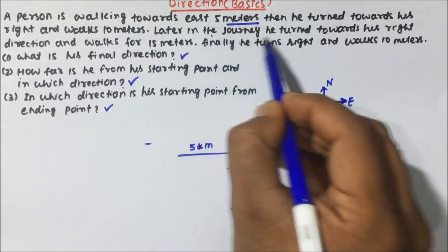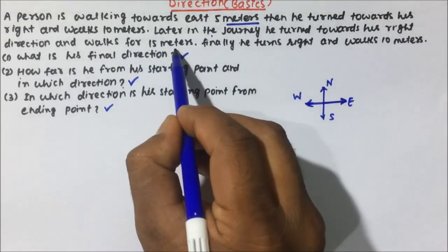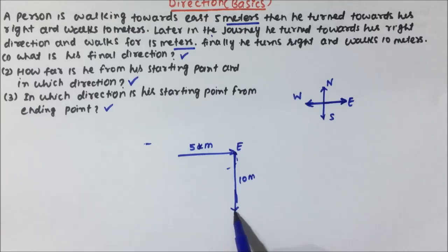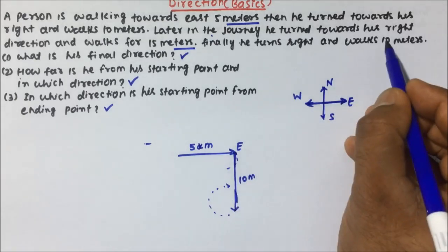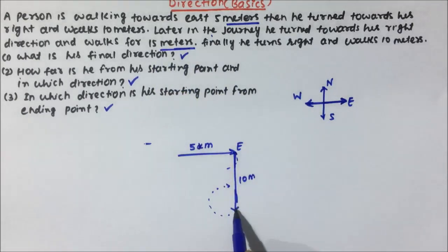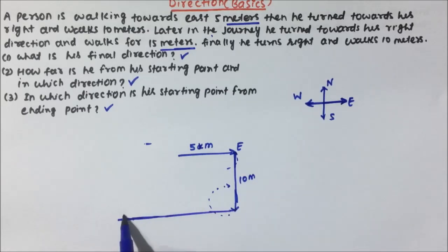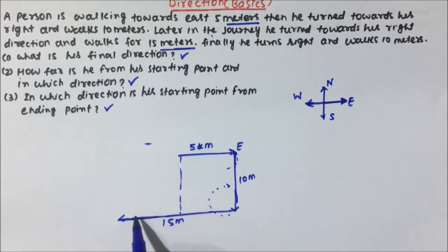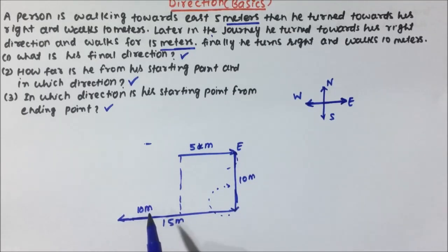Then later in his journey, he turns towards his right direction and walks 15 meters. Again, we have to find out in which direction right will be. Put your pen point here — clockwise means you go towards the minute hand direction. So the clockwise direction will be in this direction (west), and again he is moving 15 meters to the right. This 15-meter segment is parallel to the first 5-meter segment, and the 10-meter vertical distance remains.